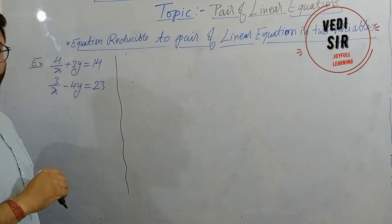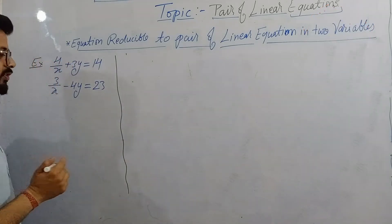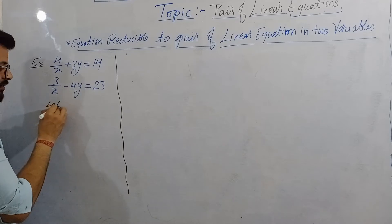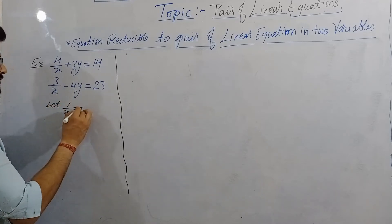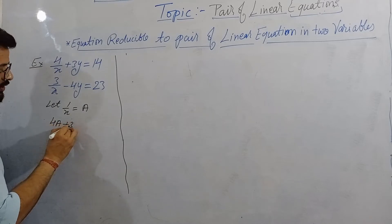But you know one upon X is only coming different, so only you assume that one upon X is equal to A. ABC is your choice, I'm taking A. Okay, no need to take this one upon Y because already it is in linear format, not in divided form.